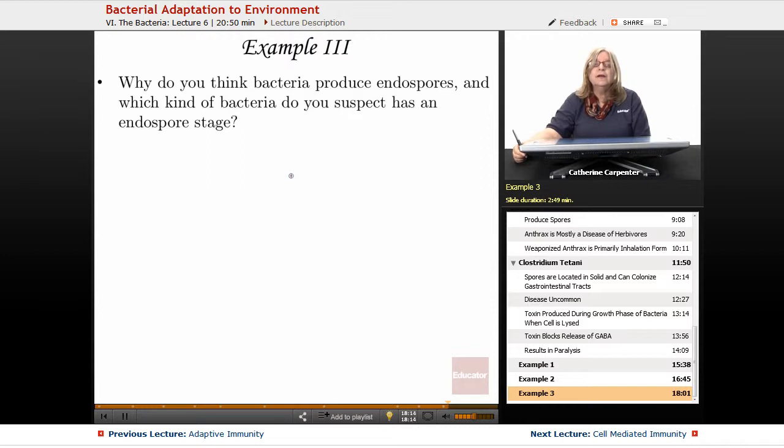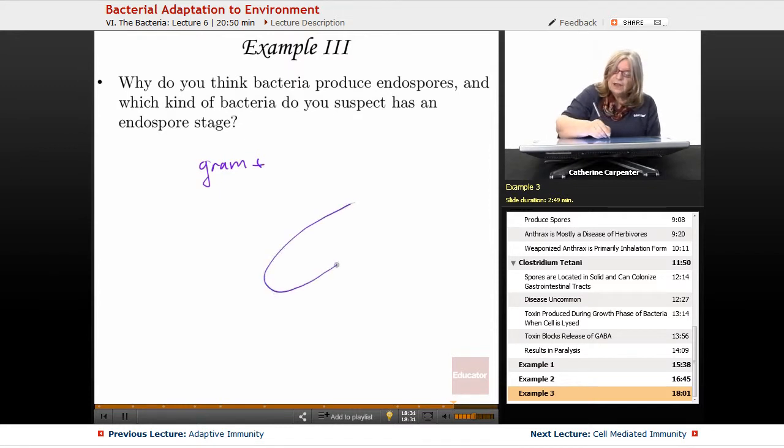Now we talked about three examples today and each of those three bacteria were gram-positive. Now what do we remember about gram-positive? Remember, gram-positive has that outer peptidoglycan layer that's composed of those polysaccharides linked up with protein.